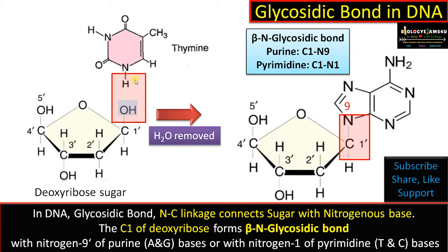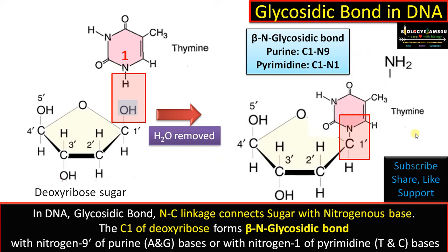In the case of thymine, at the N1 position there is a hydrogen. So the C1 OH of the sugar reacts with the N1 hydrogen. Here also a water molecule is removed, thus forming a glycosidic bond. In the case of pyrimidine, the bonding is therefore between C1 and N1.